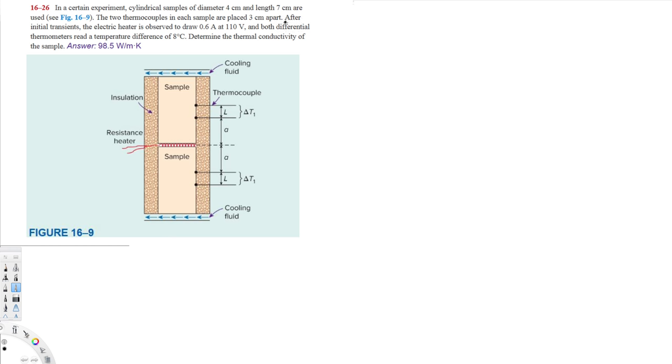After initial transients, the electric heater is observed to draw 0.6 amperes at 110 volts, and both differential thermometers read a temperature difference of 8 degrees Celsius. Determine the thermal conductivity of the sample.